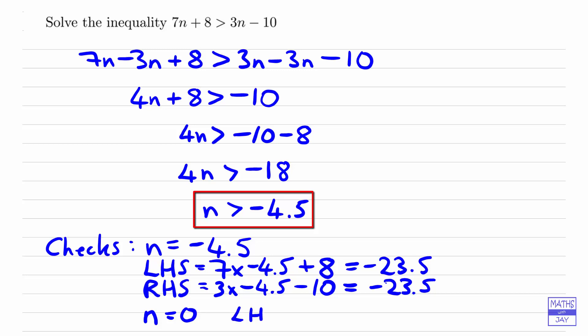the left-hand side, so that's 7n plus 8, well, 7 times 0 is 0, and so we end up with the left-hand side being equal to 8. Right-hand side, just as easy, we've got 3 times 0 subtract 10, so that's going to be equal to negative 10. And we've got that 8 is greater than negative 10.